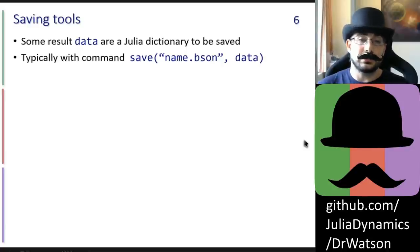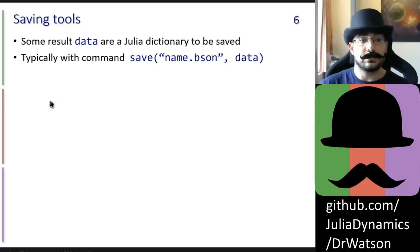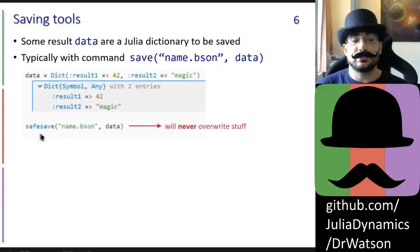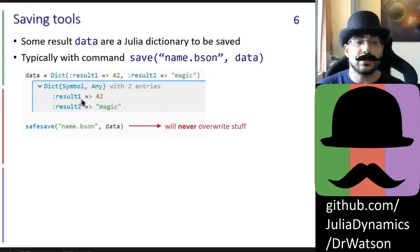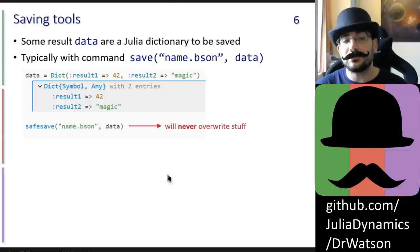Then we go into saving tools, which is a large part of Dr. Watson. Say you have some data — a Julia dictionary containing some results — and you are going to save it with a command save with a given name. Dr. Watson provides the function safesave, which will never overwrite or delete files. If there is already a file with the same name, the function will rename the existing file by adding an incremented counter, and save your new file as the original name instead.